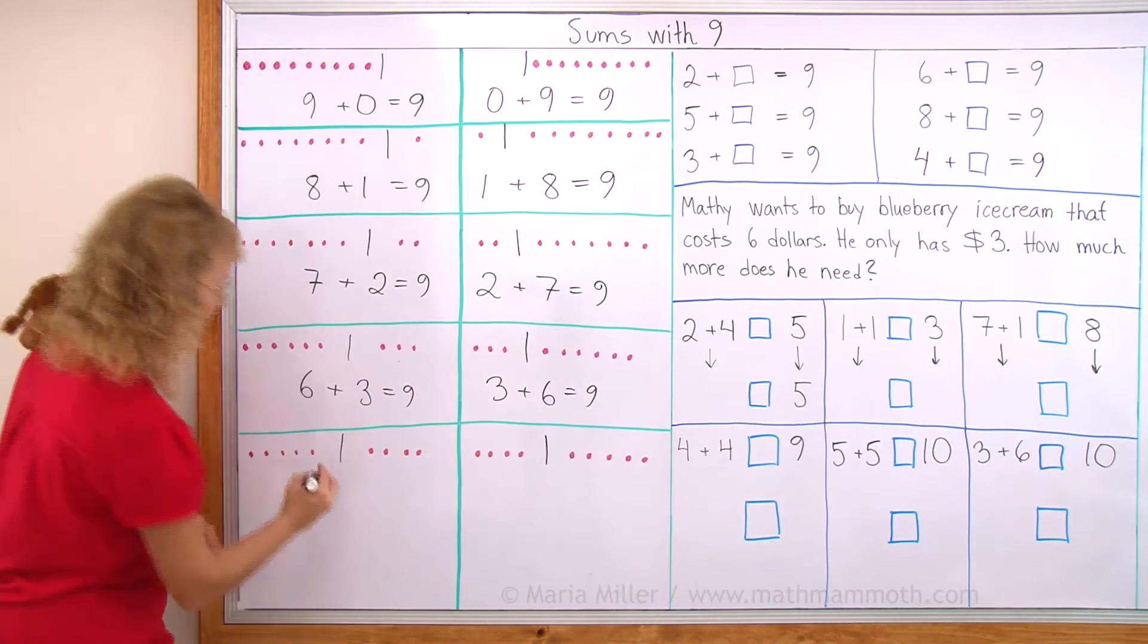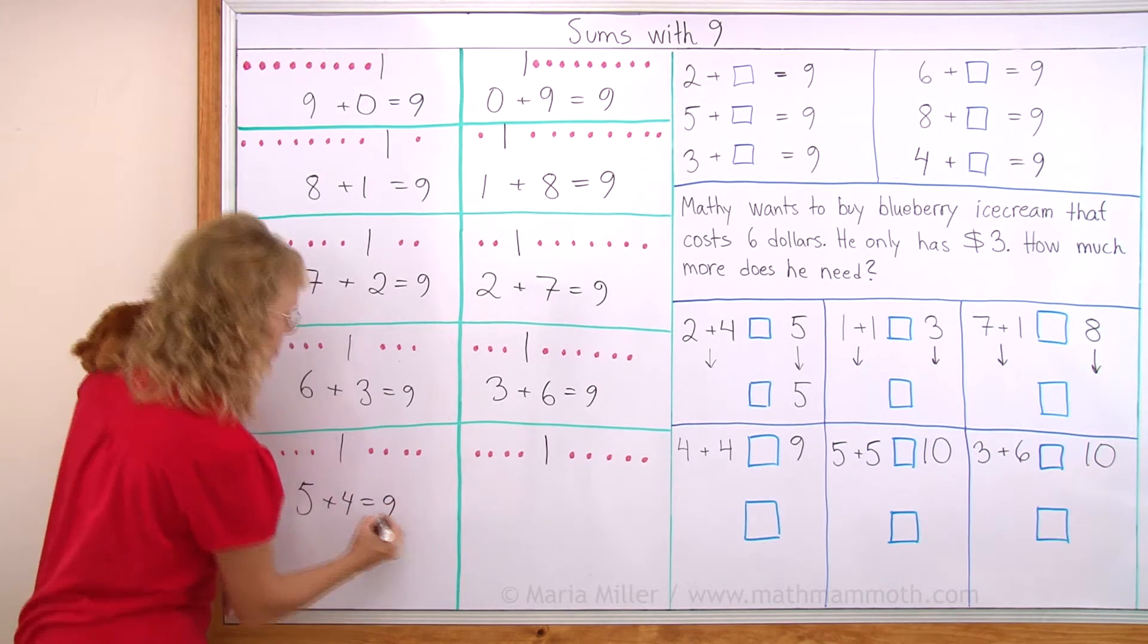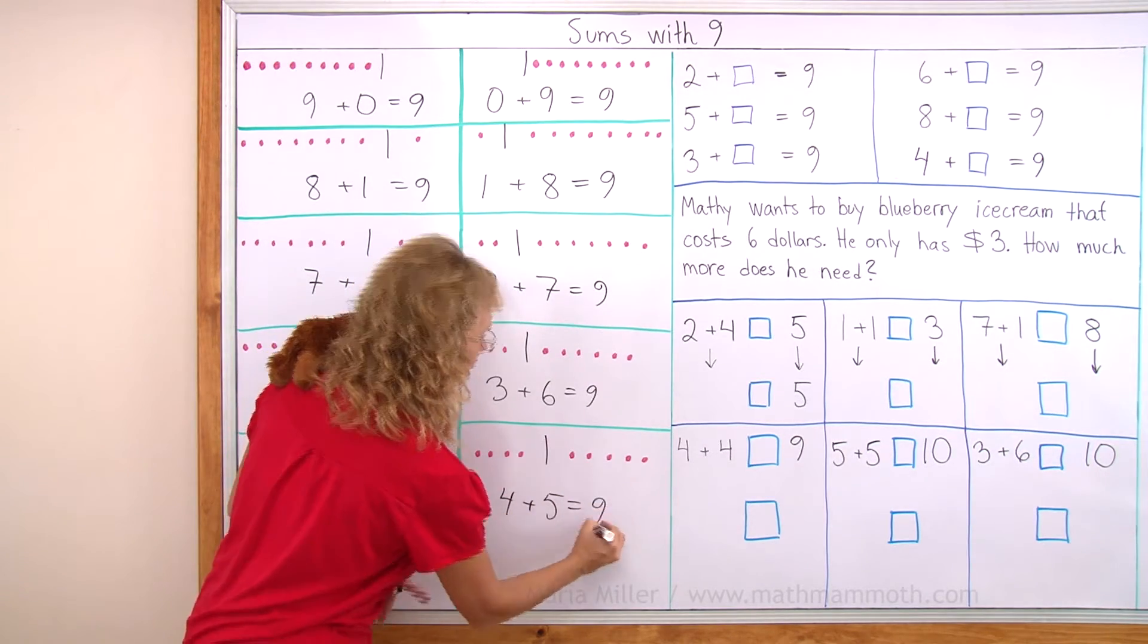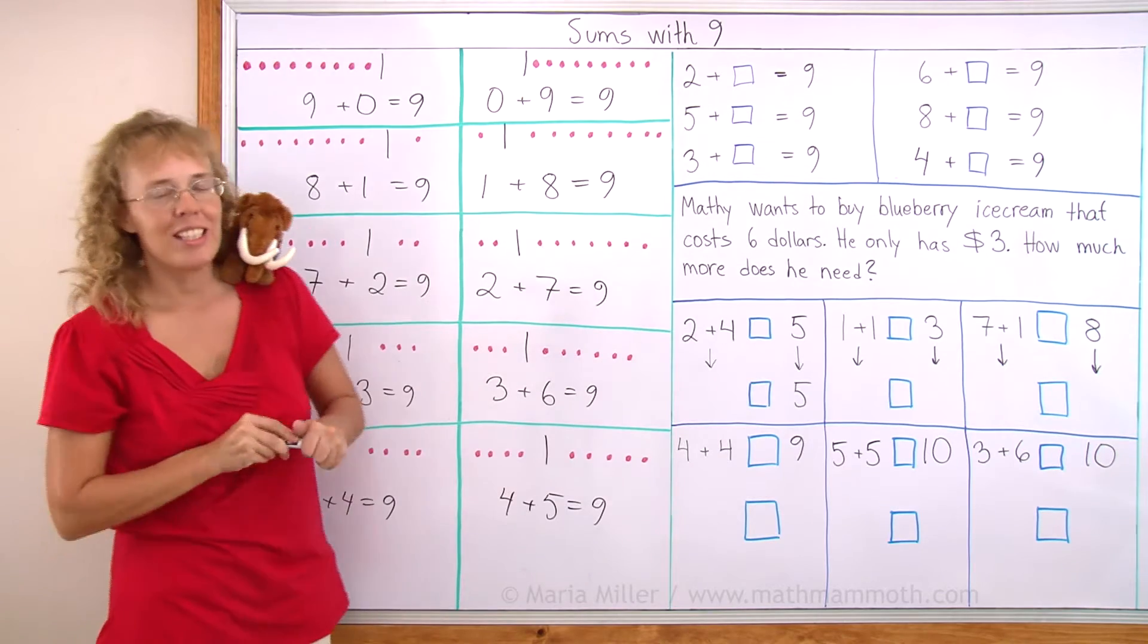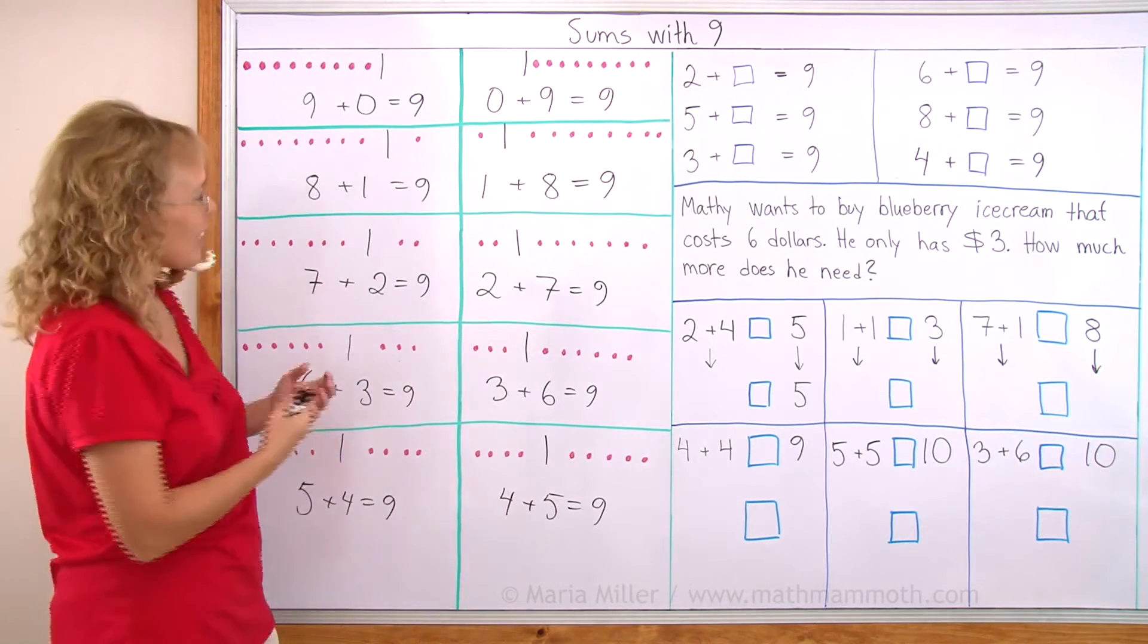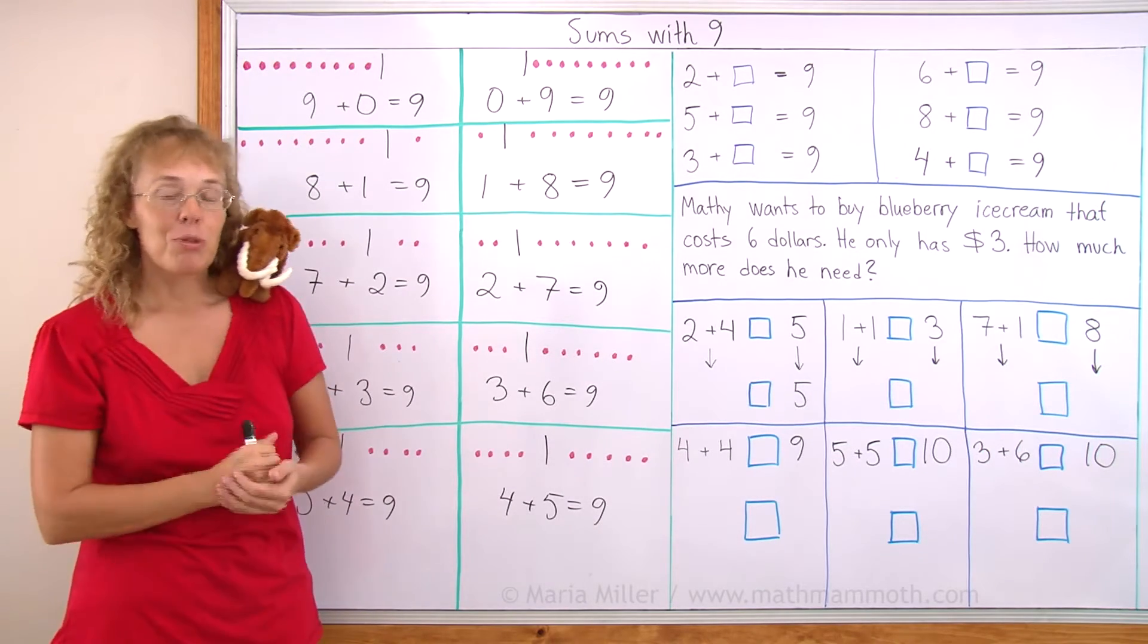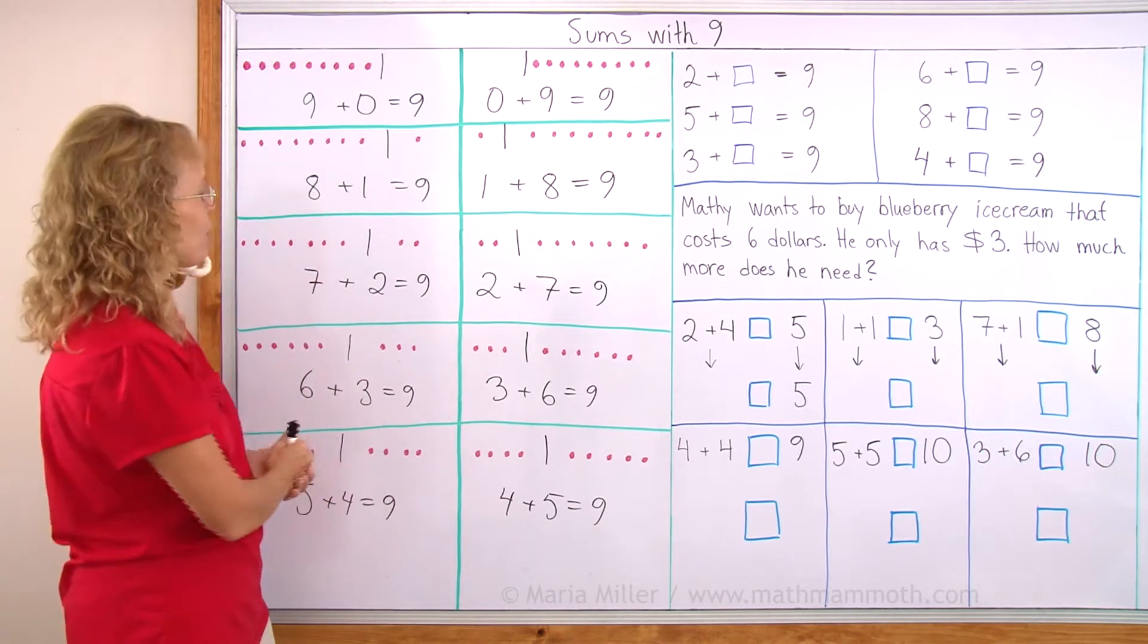Then over here 6 and 3 and then 3 and 6. And then lastly 5 and 4, 4 and 5. Alright, our table is ready. You want to look it over a little bit and study it and try to remember these sums. And of course you will be also doing it in your math book.